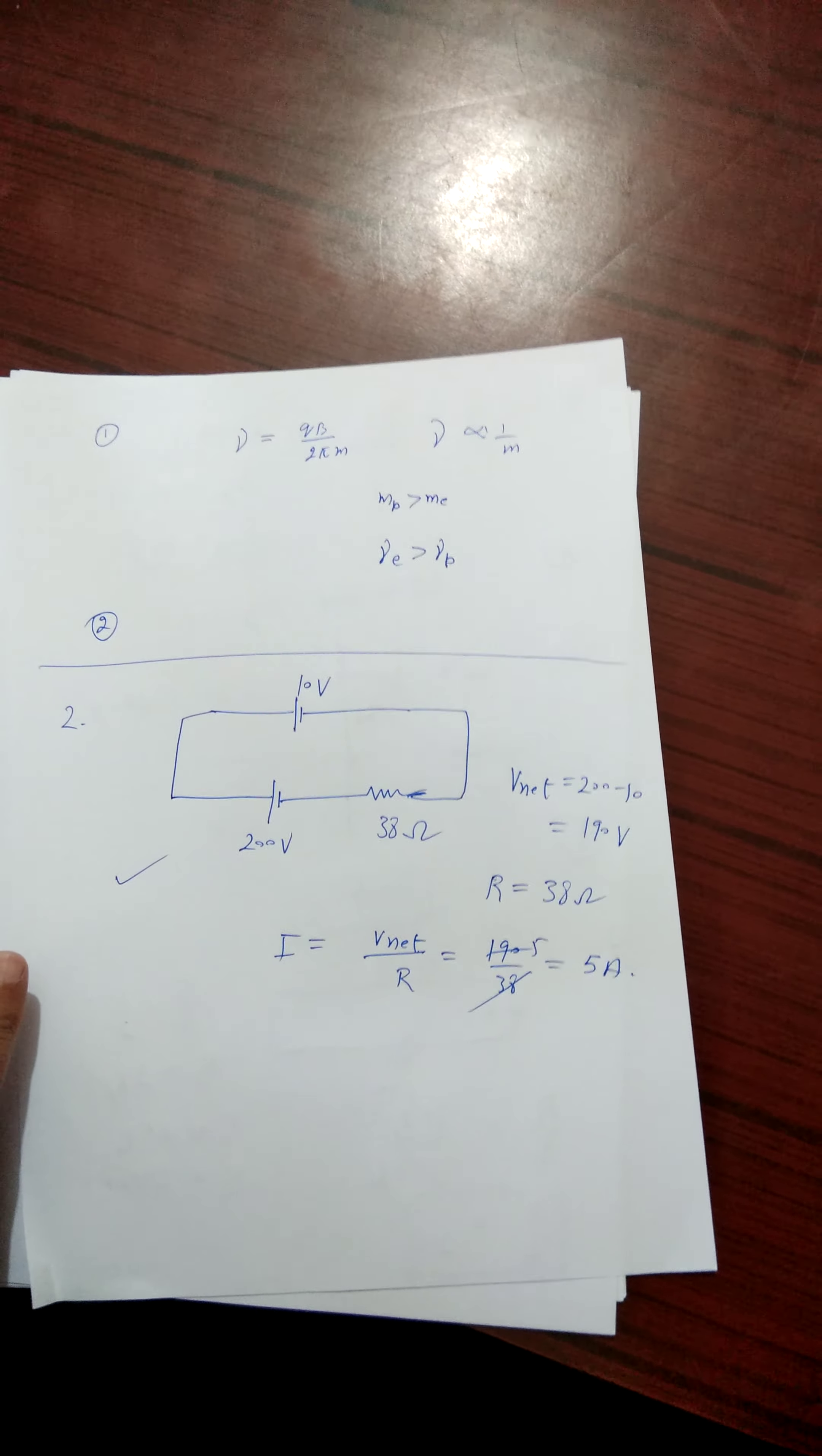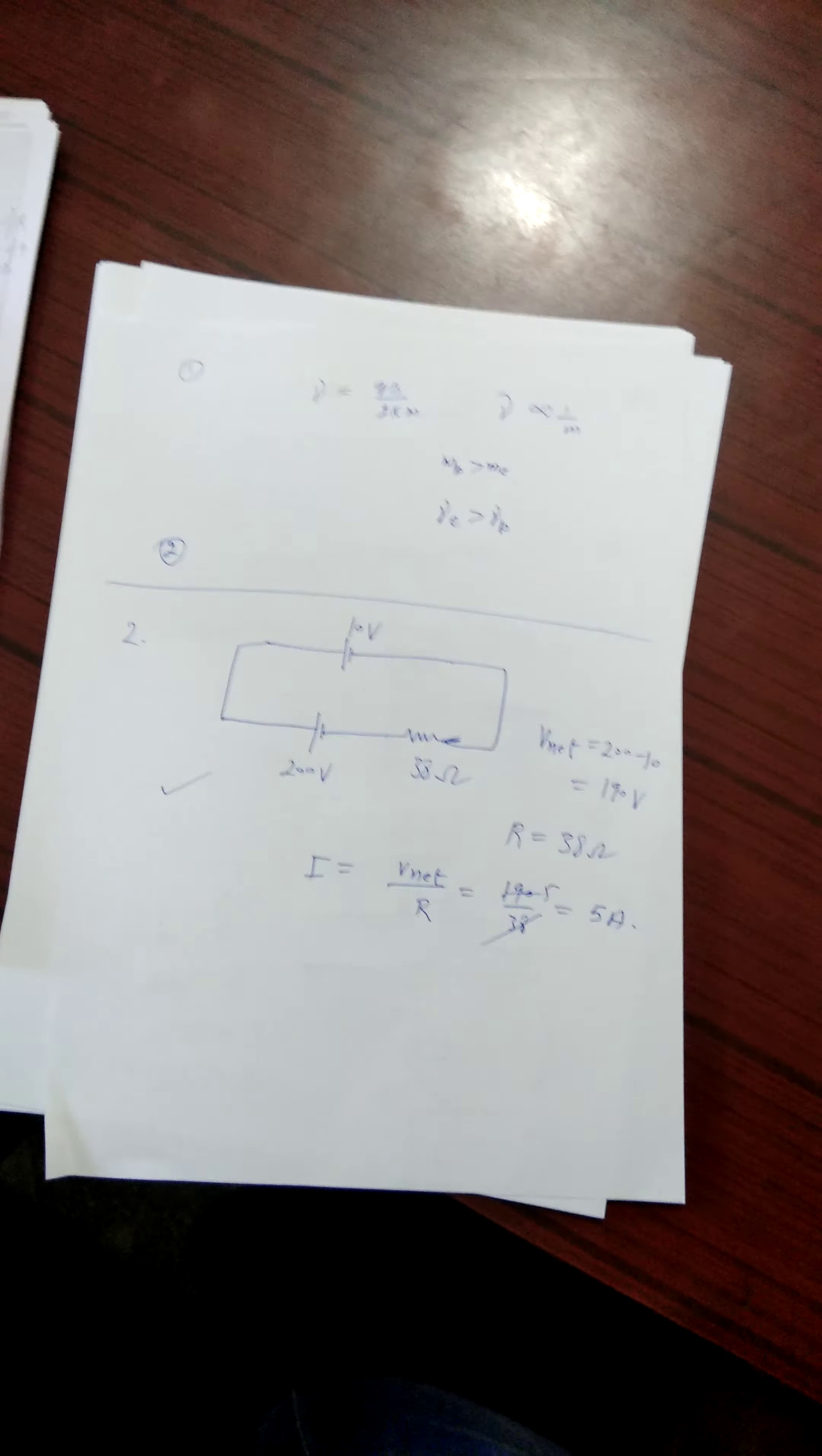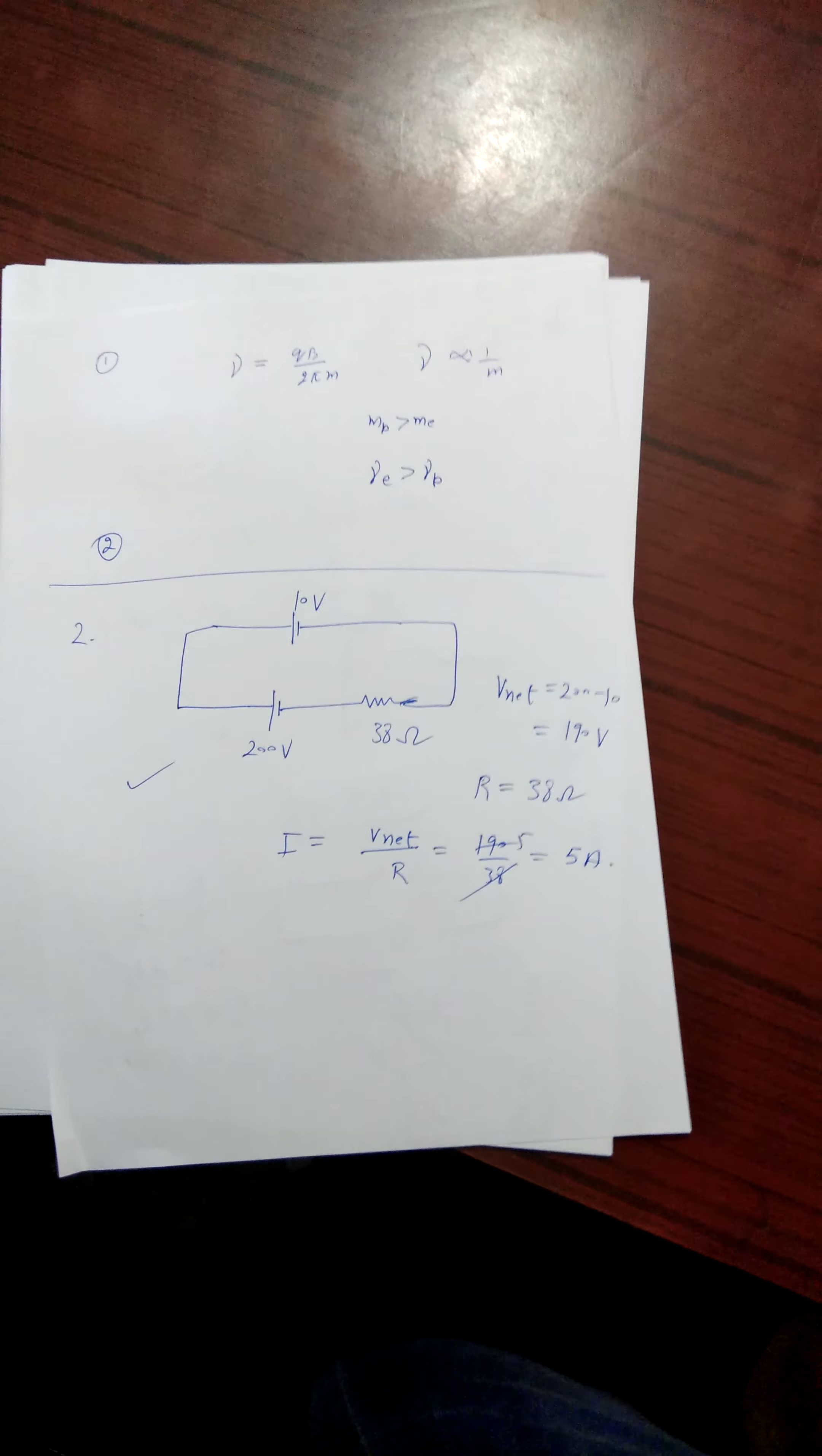The next question. In potentiometer arrangement for determining the EMF of cell. Here the question is, balance point of the cell in the open circuit is 350 centimeter. When the resistance of 9 ohm is used for external circuit of the cell, the balance point shifts to 300 centimeter. Determine the internal resistance of the cell.